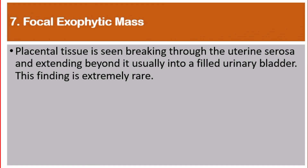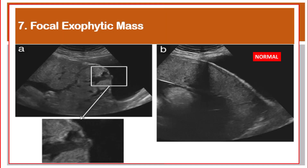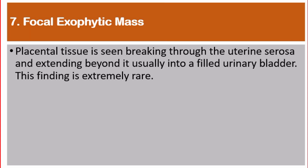Number 7: Focal exophytic mass. Placental tissue is seen breaking through the uterine serosa and extending beyond it, usually into a filled urinary bladder. This finding is extremely rare.